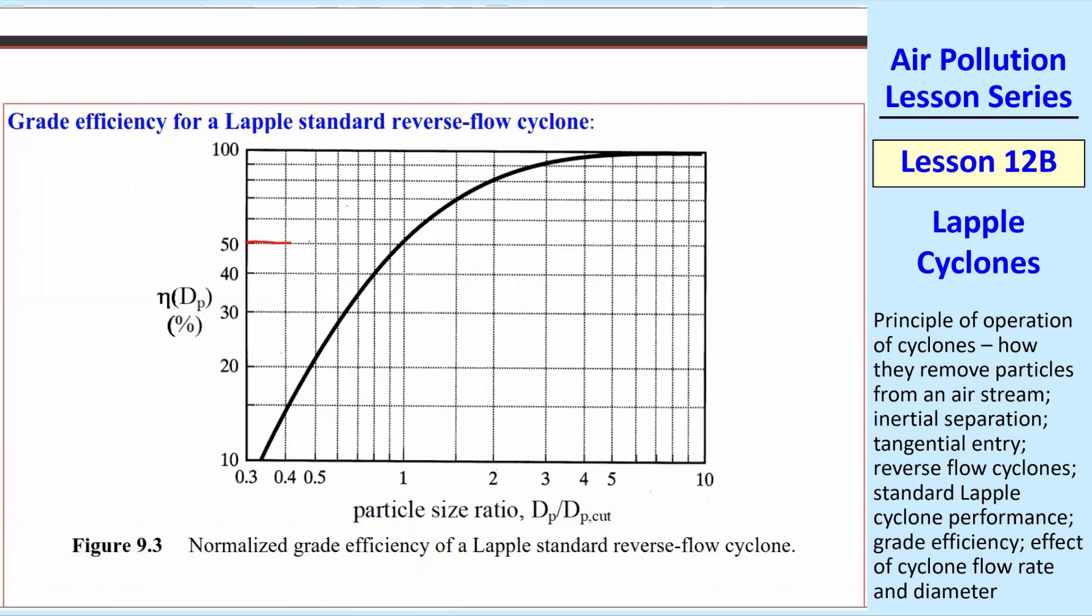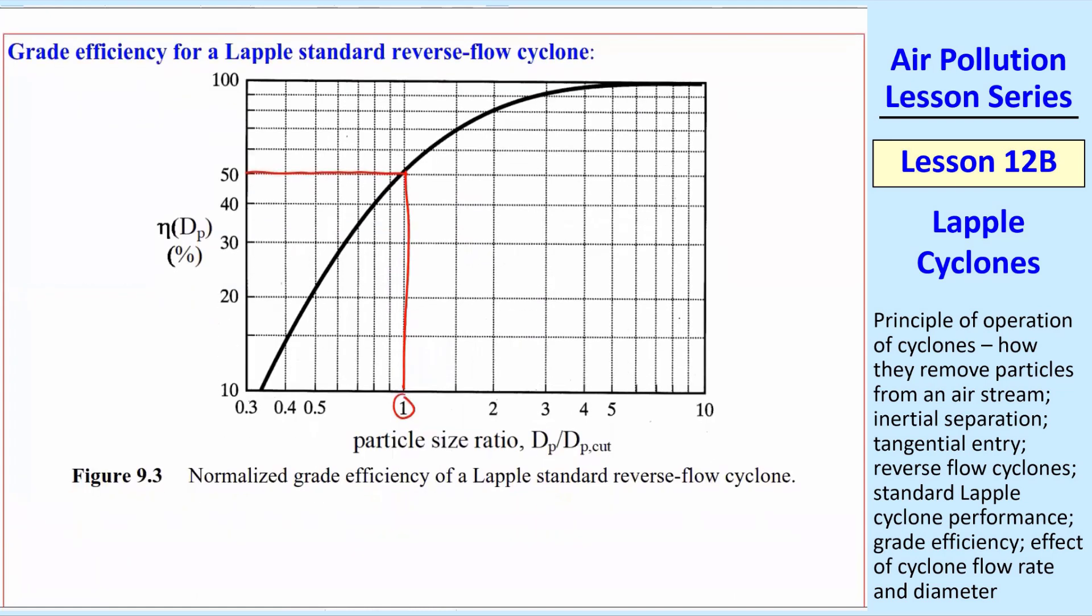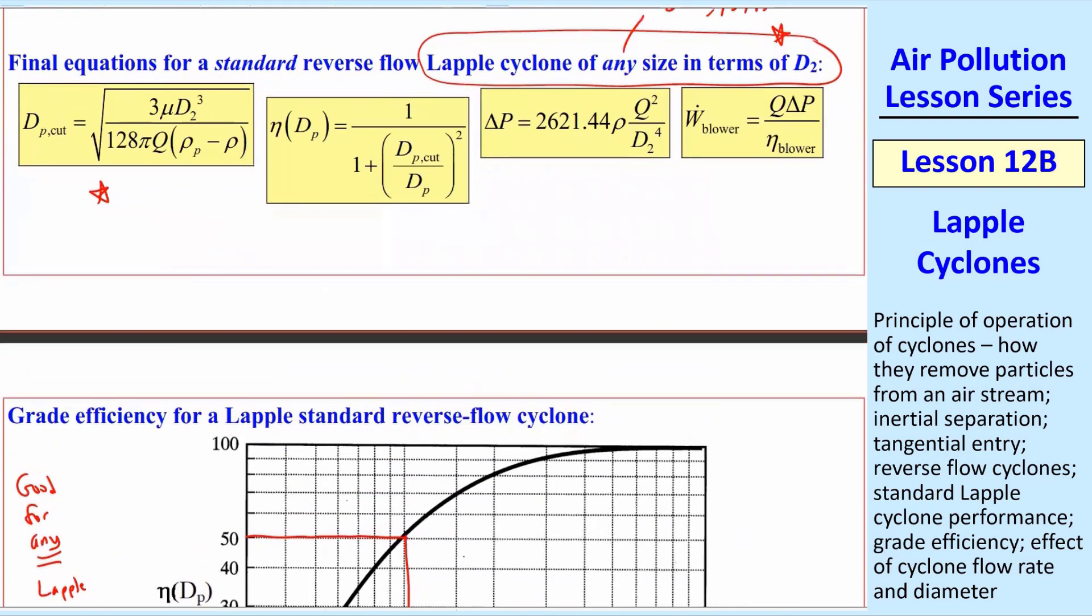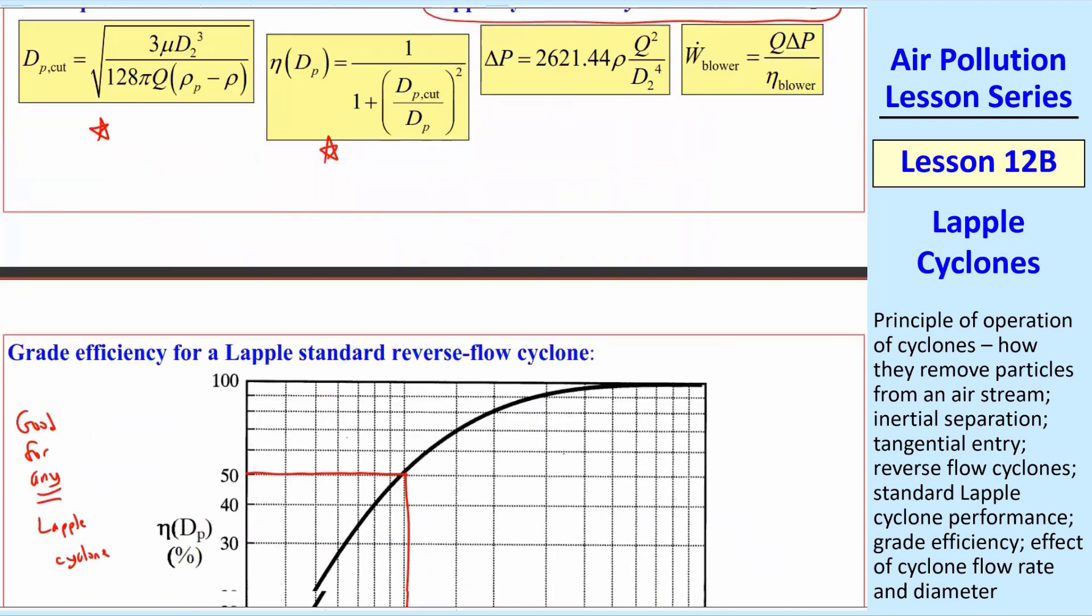Here's what the grade efficiency looks like if you plot that equation. Of course, we have a cut diameter based on 50%, and that's 1. That's not 1 micron. This is normalized, DP over DP_cut, so that this 1 figure is good for any Lapple cyclone. Notice these are both log scales, so it's a log-log plot. Of course, nobody wants to read off the plot, so that's why we have these equations. So here's the equation. I just plotted this equation.